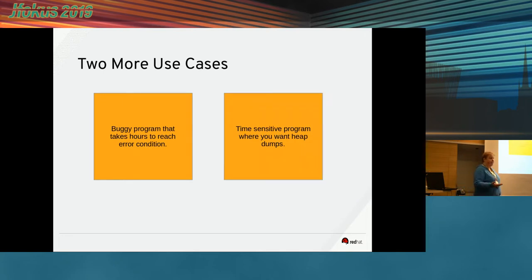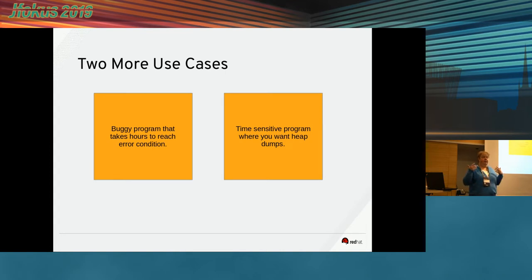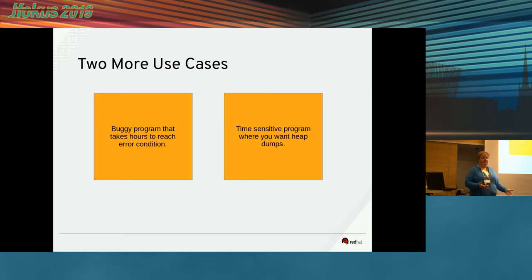When I gave this talk at FOSDEM I got two more Java use cases. If you have a buggy program that tends to fail after 24 hours or something — I have been in this situation in my life — maybe you want to checkpoint fairly often, and then you'll have the checkpoint right before it failed that you can go back and work on over and over again. There were also people at FOSDEM who wanted to do heap dumps, but the time it took to do a heap dump perturbed the program enough that they didn't get the bad behavior they were trying to fix. So you can checkpoint fairly frequently, and then come back and do a heap dump from the point that you checkpointed.